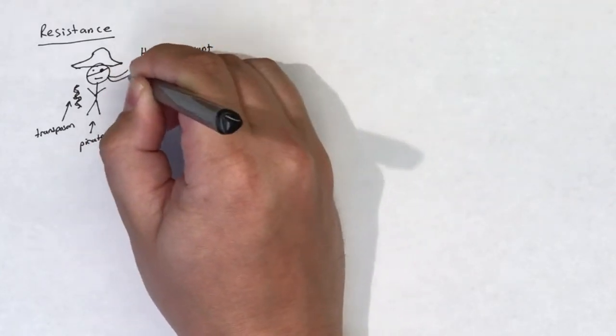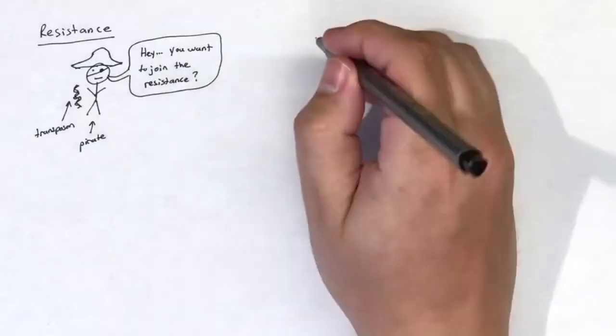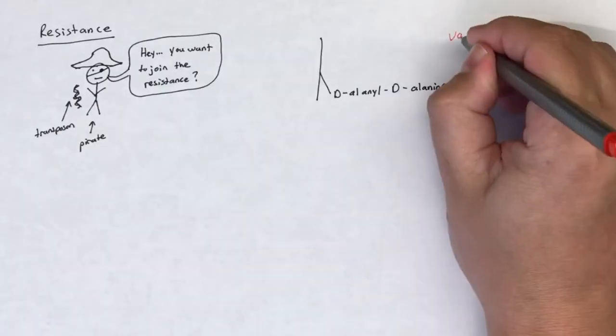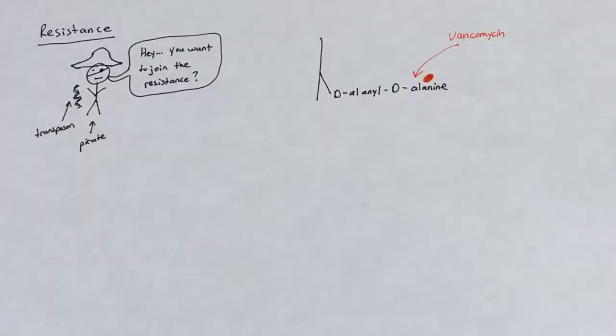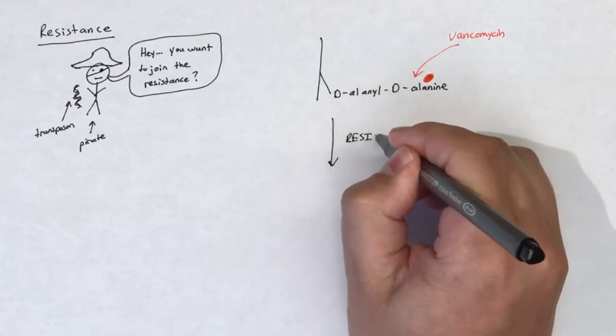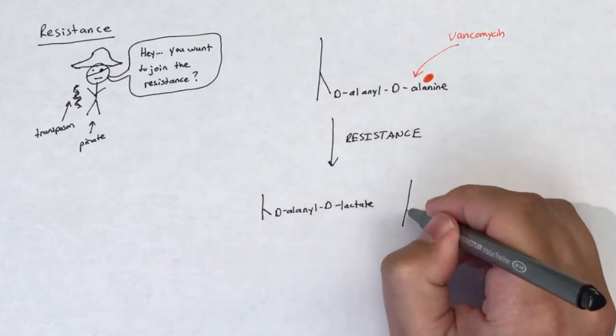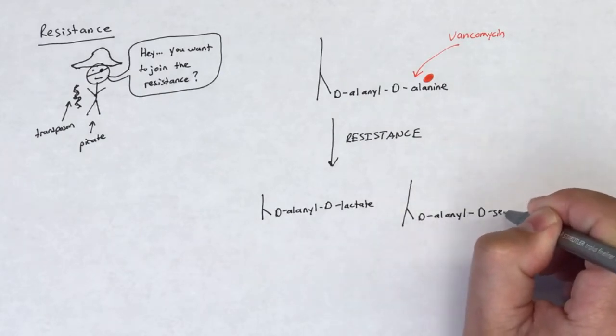The resistance stems from a change to the glycopeptide binding site. If this site is able to change from the D-alanyl-D-alanine target to D-alanyl-D-lactate or D-alanyl-D-serine, then the glycopeptide will bind poorly.